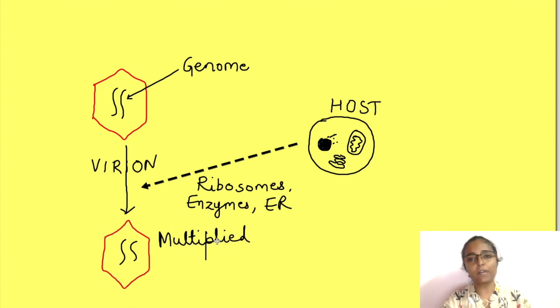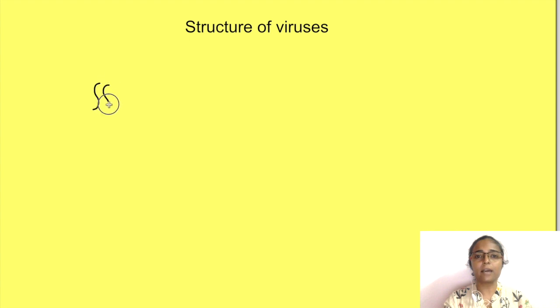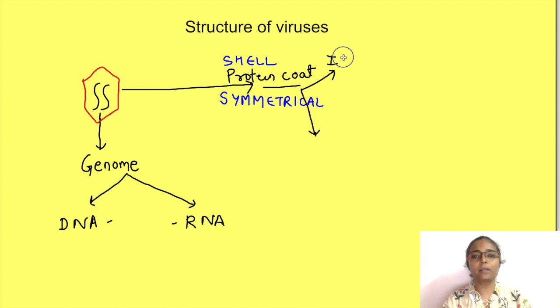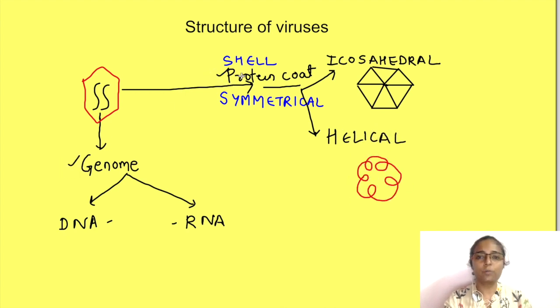First we will discuss the structure of viruses in general and then we will see the aspects particular to coronavirus. All viruses have a genome which is surrounded by a protein coat known as capsid. The genome may be either DNA or RNA but never is it both. This is in contrast to all other organisms which have both DNA as well as RNA. The protein coat, that is the capsid, is basically proteins which are arranged in a symmetrical manner and form a protective shell for the nucleic acid. The symmetry may be either icosahedral that is has 20 triangular faces or it may be helical. So all viruses have a genome and a protein coat.